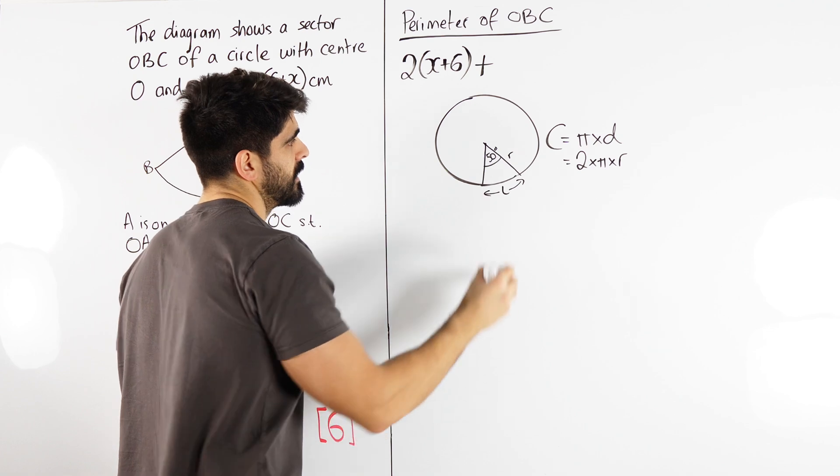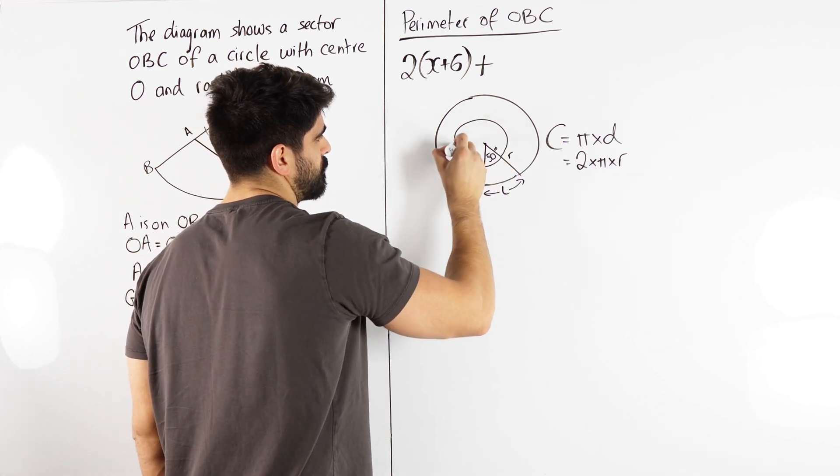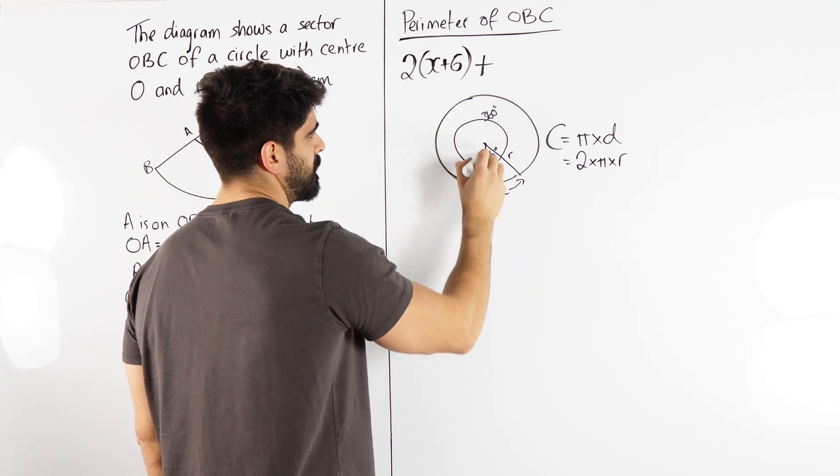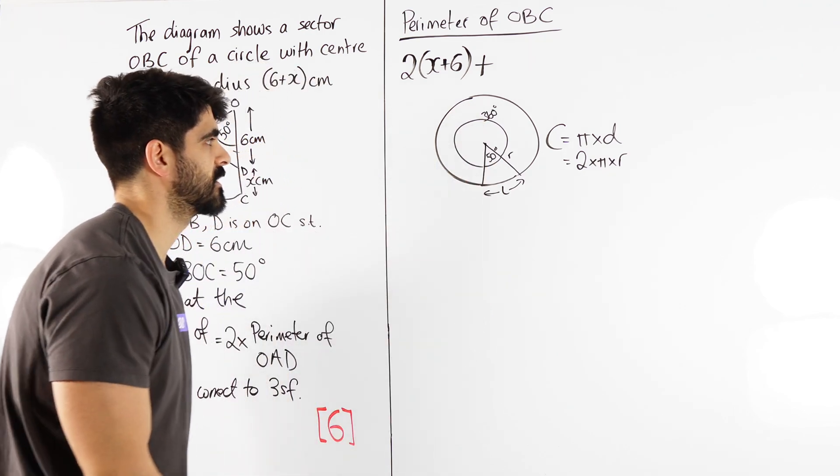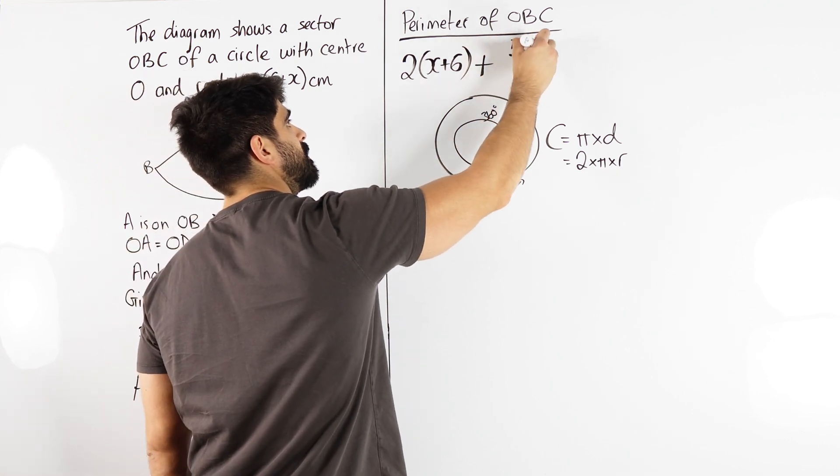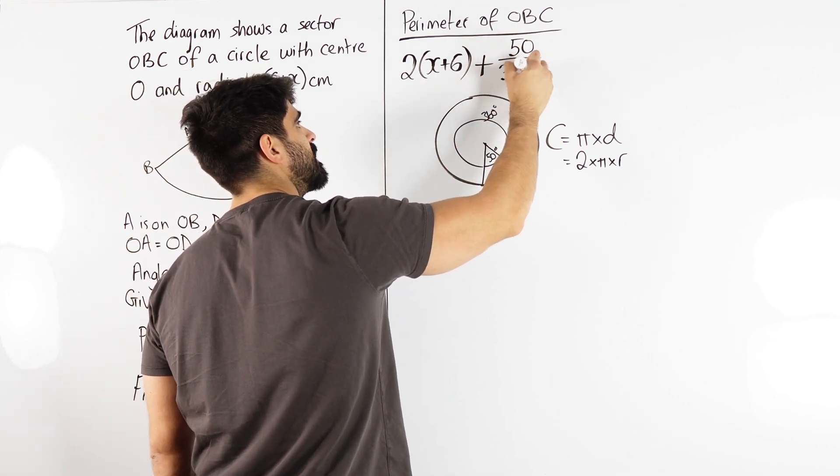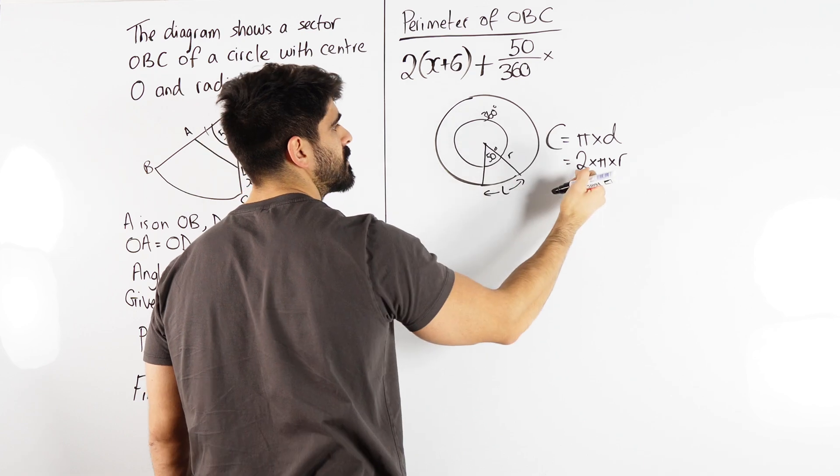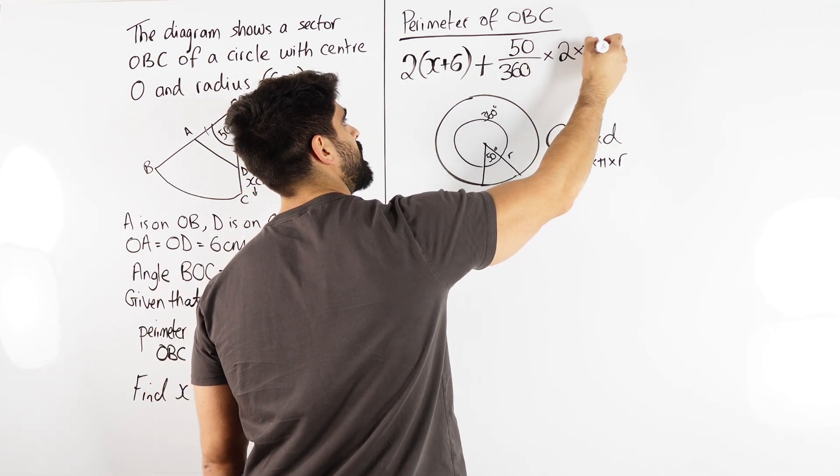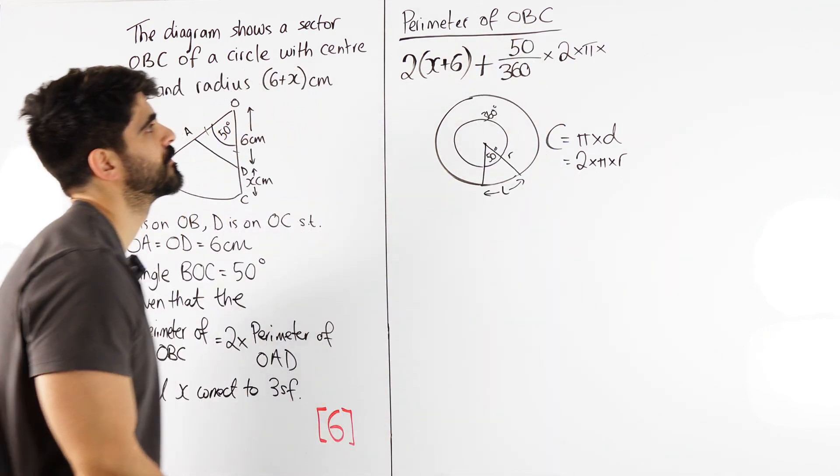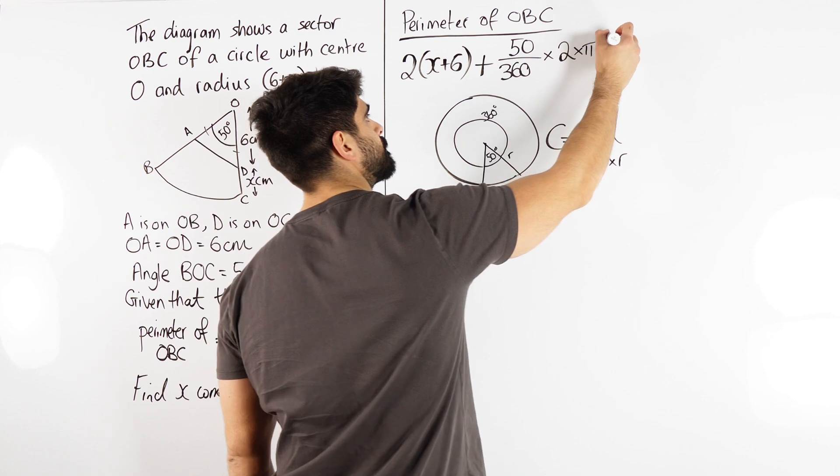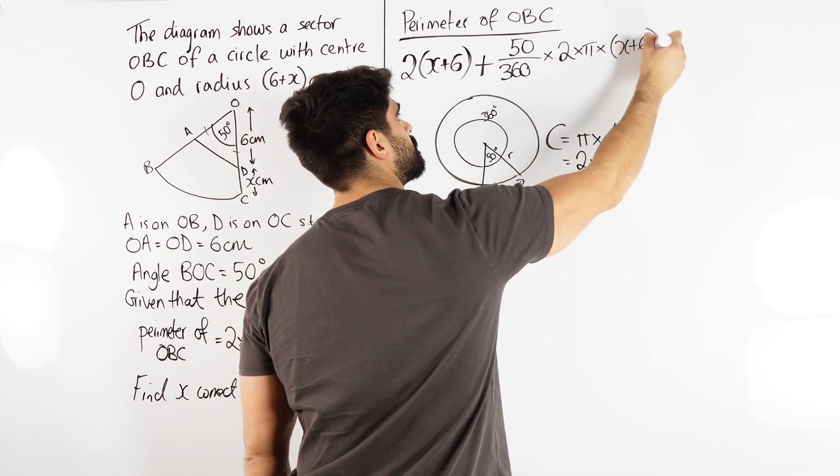So this is some fraction of that, it's going to be smaller. How do we work out what fraction that is? It depends on the angle here. We had 50 degrees, right? It's how big is that relative to the 360 degrees? So the fraction is 50 divided by 360. Okay, so that's what we're going to say. It's going to be, the fraction is 50 over 360, times 2 pi r, times 2, times pi, times the radius. Now the radius again is x plus 6.